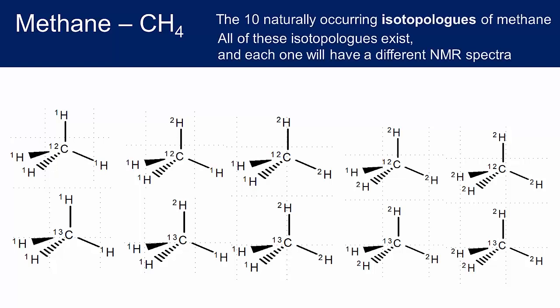These ten possibilities are the ten isotopologues of methane, and in a natural sample you would expect to find all of them. I want to begin thinking about a hypothetical NMR experiment on a sample of methane. Different isotopes have different nuclear spin moments, and each different isotopologue may give a different NMR spectrum. From our knowledge of the natural abundances of different isotopes, we can determine the natural proportions of each of the isotopologues in our sample.